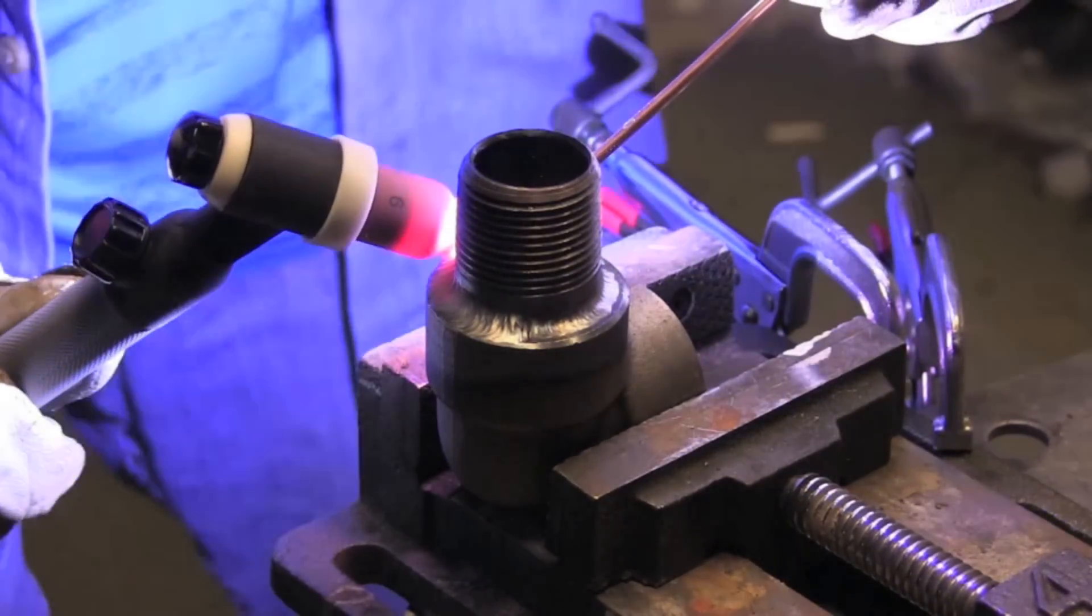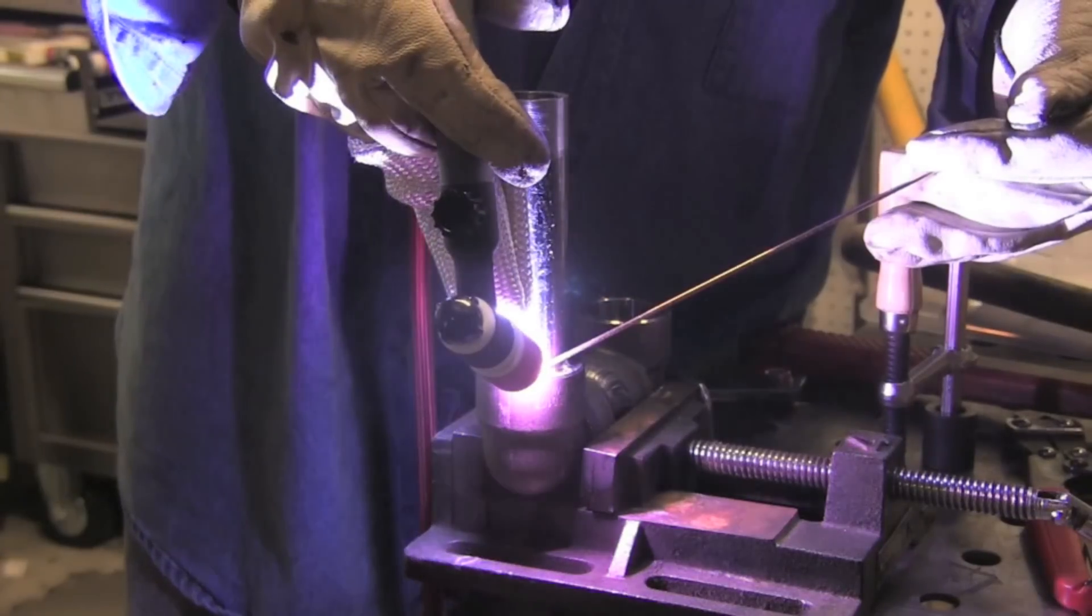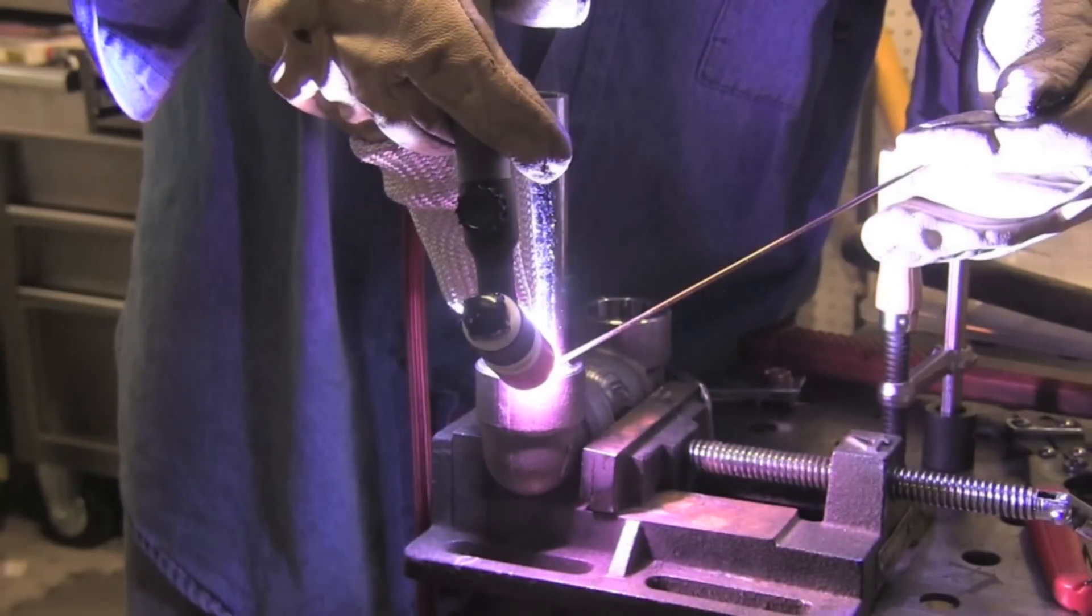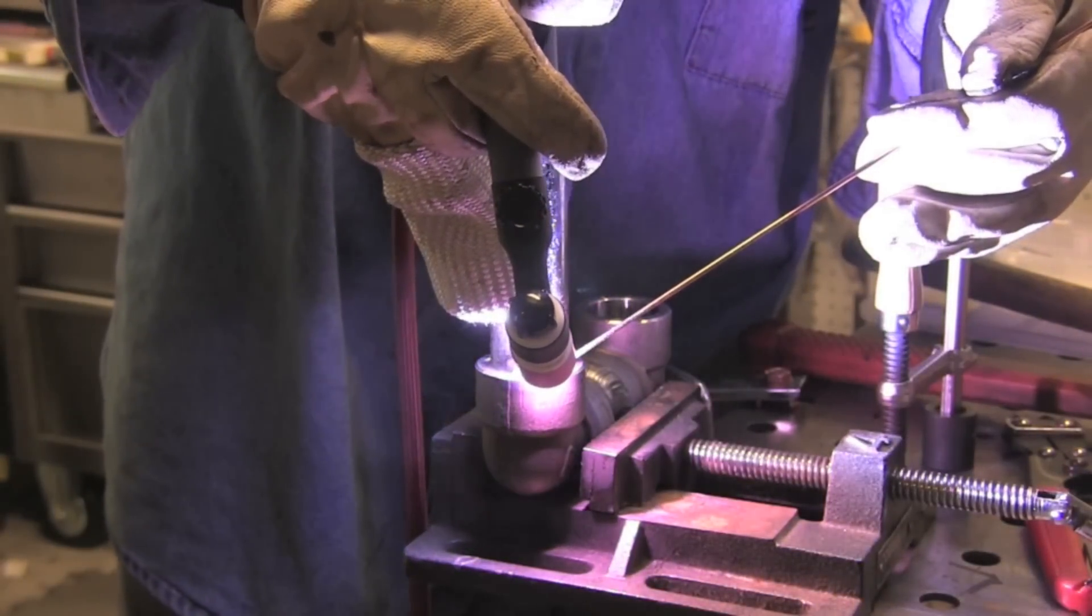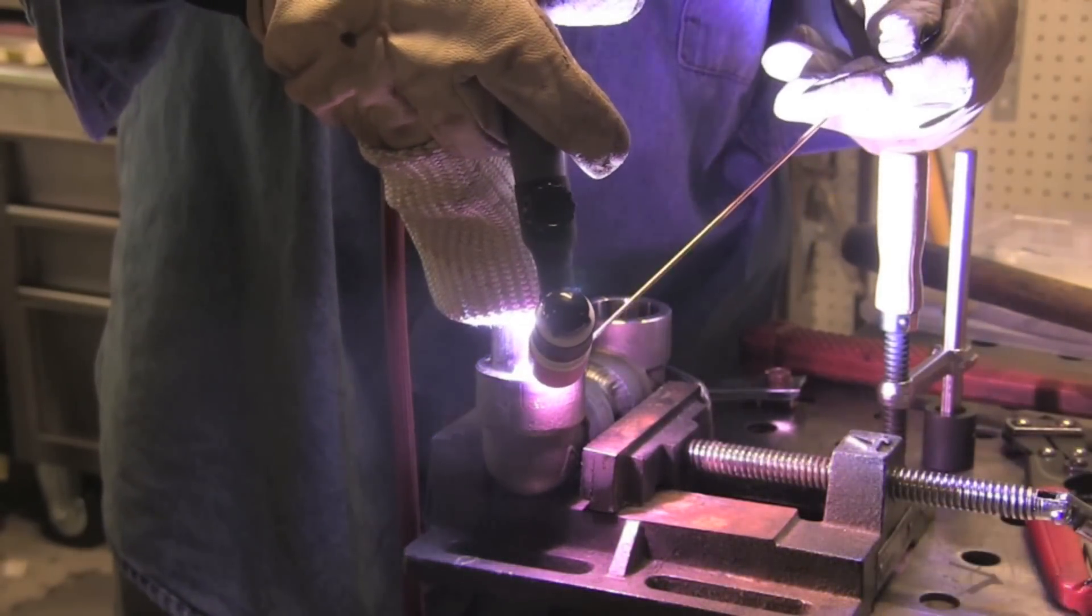Now if you can't learn how to walk the cup, there's always free handing. And if you're going to free hand, a TIG finger really helps. As you can imagine, that pipe is getting pretty hot right here. And so you need something on your finger to kind of keep it from cooking.